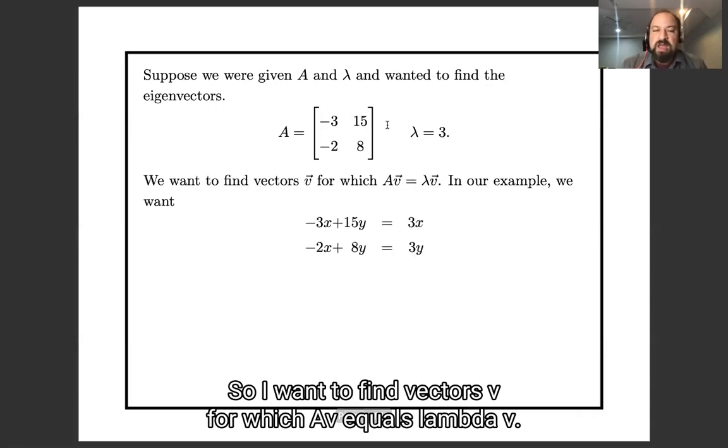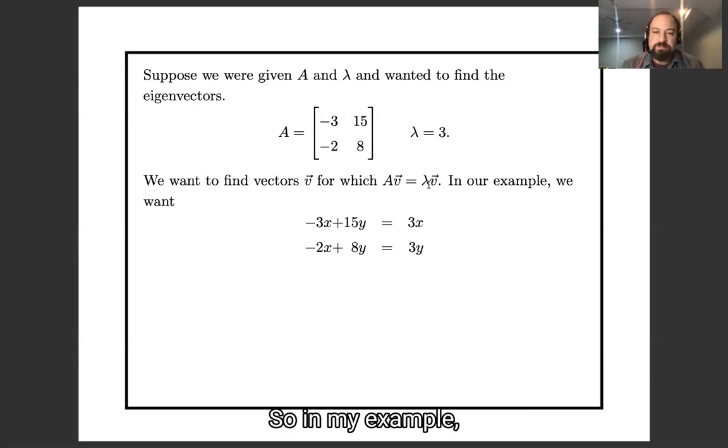So I want to find vectors v for which Av equals lambda v. So in my example, I want this, this over on this side is A times v, and this over on this side is lambda v.